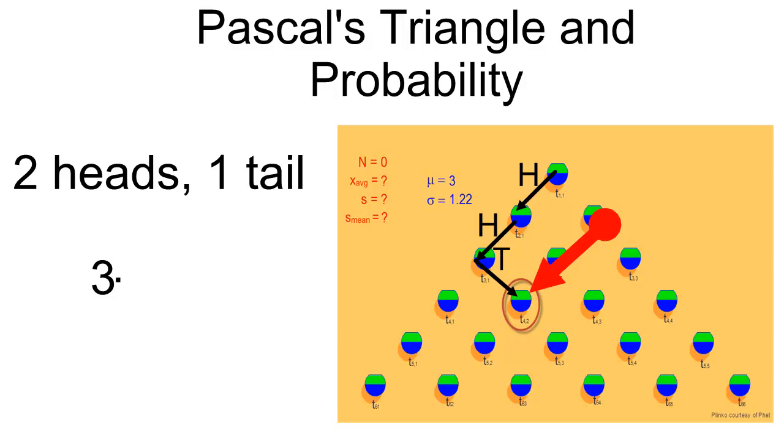And so there are three times the probability of flipping the coin and getting a head, flipping the coin and getting a second head, and flipping the coin and getting a tail. And so the probability of getting two heads and one tail in any order is three times one half cubed, or three eighths.